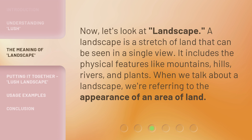Let's look at Landscape. A landscape is a stretch of land that can be seen in a single view. It includes the physical features like mountains, hills, rivers, and plants. When we talk about a landscape, we're referring to the appearance of an area of land.